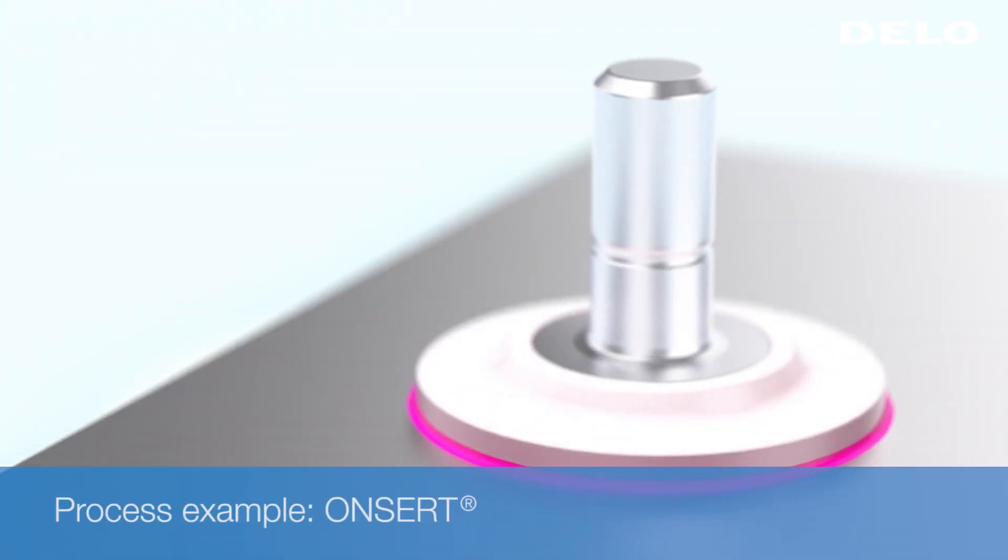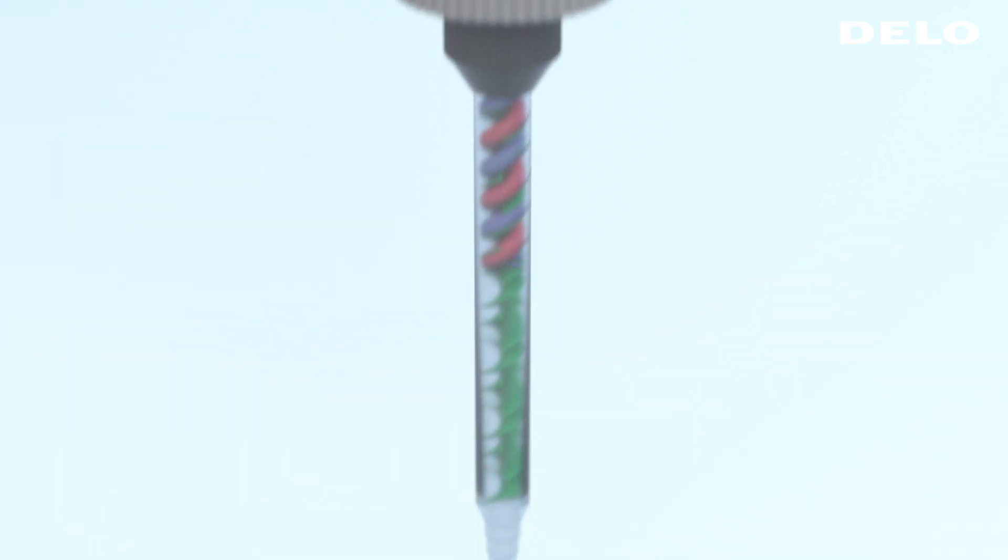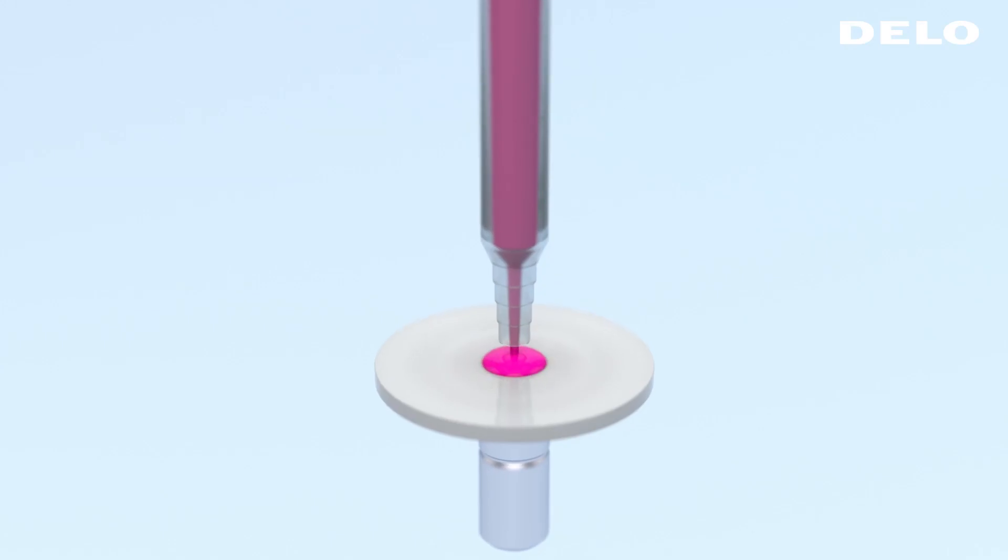In this video an on-sert for structural fixation is used as a process example. After being mixed in the mixing tube the adhesive is dispensed onto the on-sert.